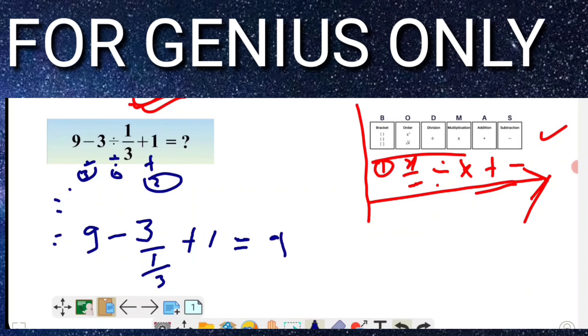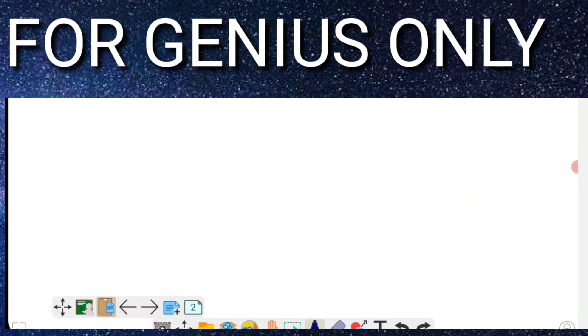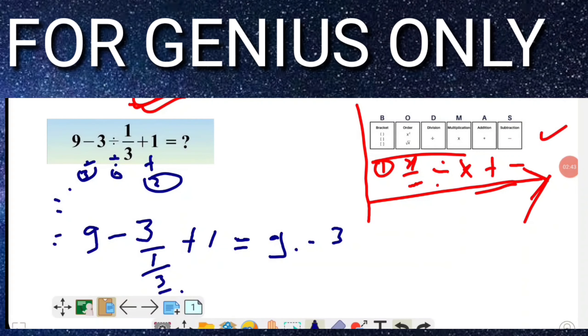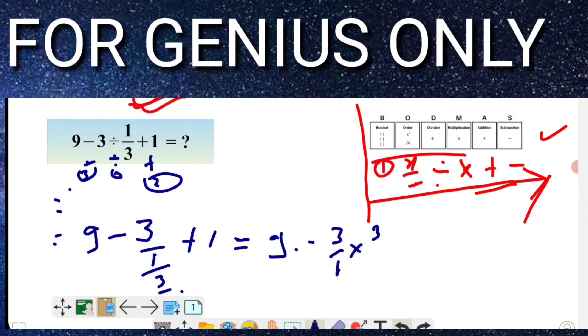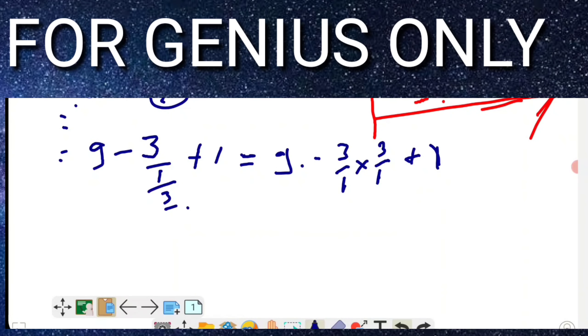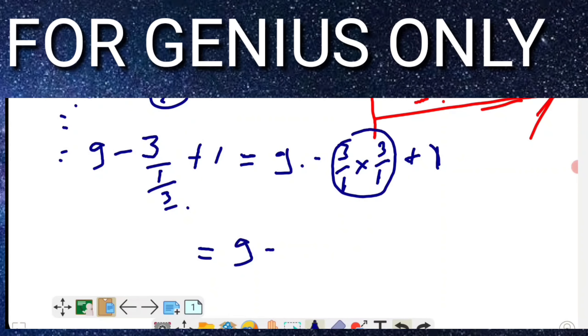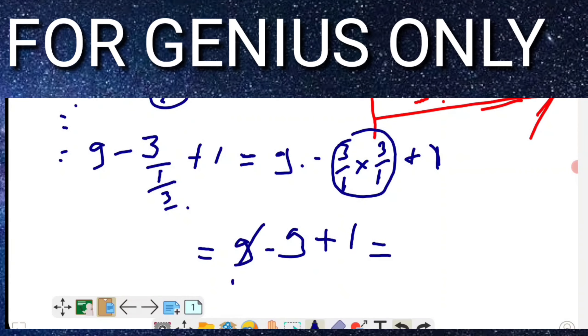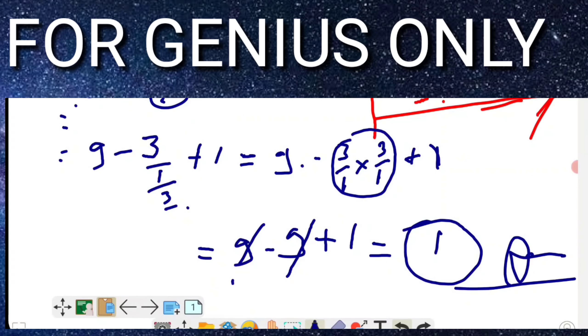9 division 3, so it will come 3 by 1, which is 3, plus 1 equals 4. Then 9 minus 3 equals 6, multiply by 3 equals 9, plus 1. When I will remove: 3 minus 3, what will rest? It will come to 1. What is the answer of this question? It is 1.